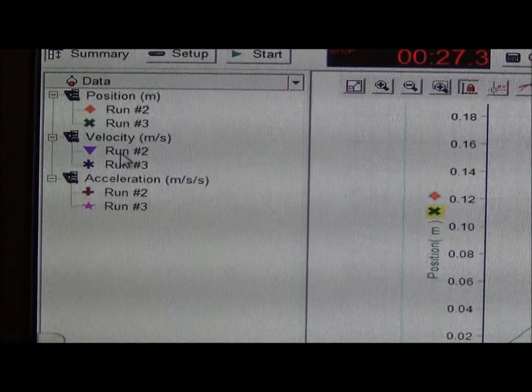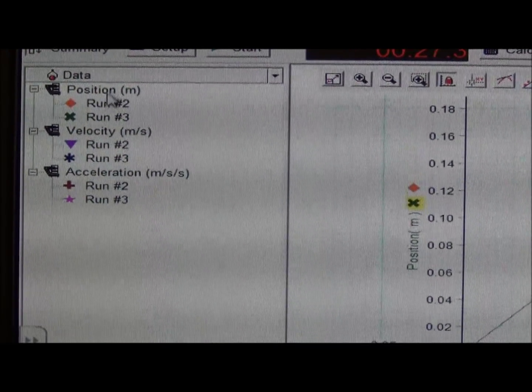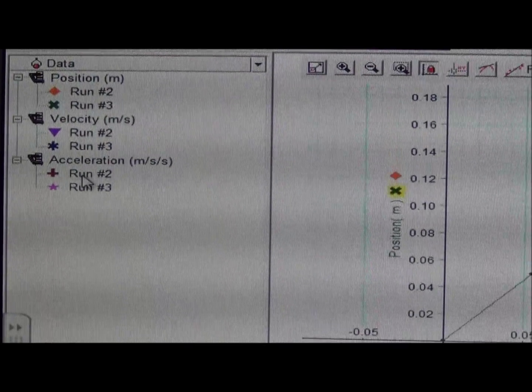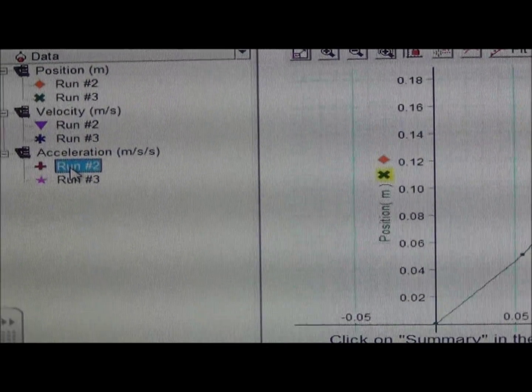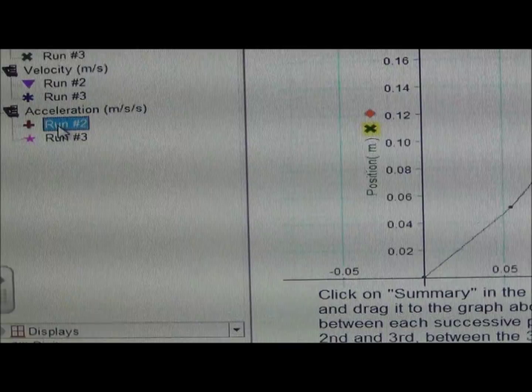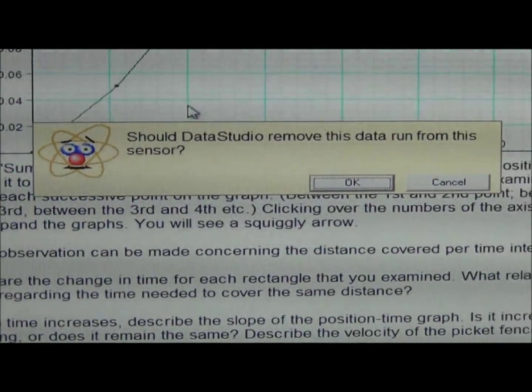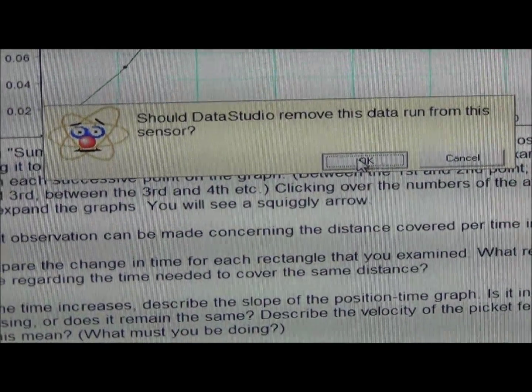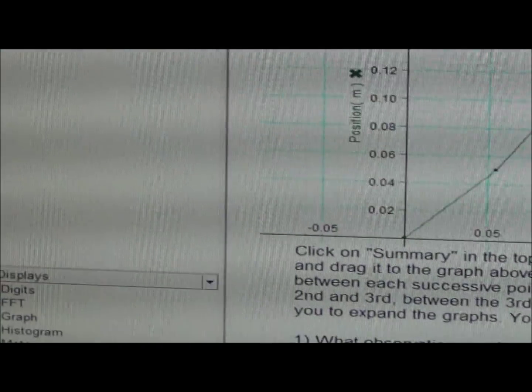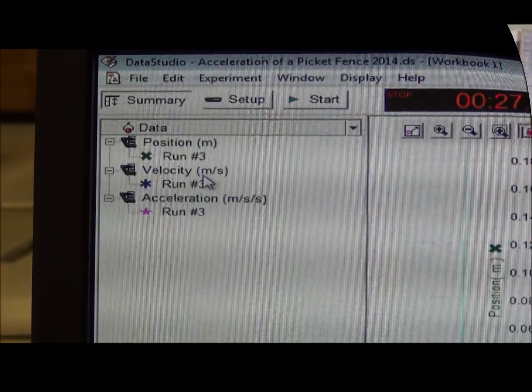I can do the same thing with run number 2, whether I click under Position, Velocity, or Acceleration. Let's say I want to remove run number 2. Click Delete on the computer. Again, Data Studio is going to open up and ask me to say OK. The only thing I have left is run number 3.